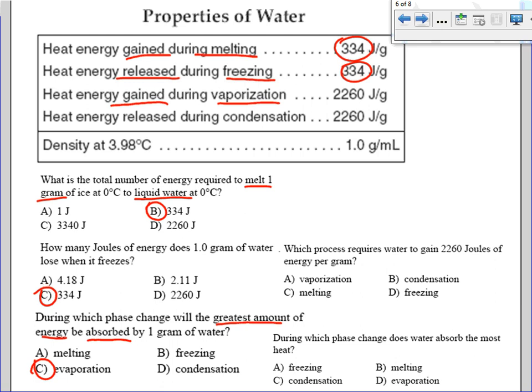Which process requires water to gain 2,260 joules of energy per gram? Similar question, just worded differently. Gain, so it's going to be vaporization.